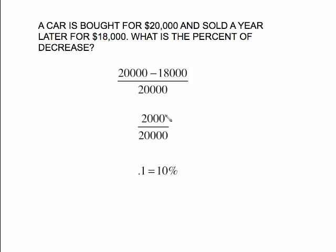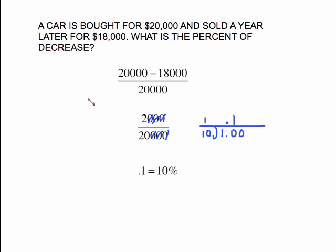If you had to do this by hand, cancel out the zeros — a zero on top with a zero on the bottom — and that gives you two over twenty, which you can reduce to the fraction one tenth. If you have to divide by hand, extend the line, draw your curve, bring the one down, give it a decimal point and a couple zeros, then start dividing. The decimal point comes straight up; ten goes into ten once, giving you point one. Reduce as far as it will go before doing the division, and remember to move the decimal point two places to the right to get a percent.